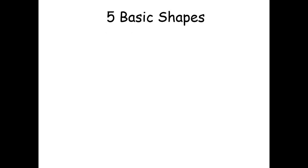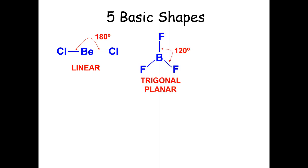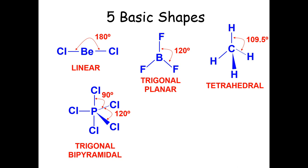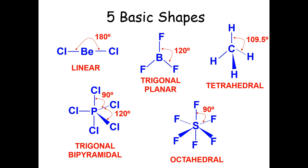So those are what I call the five basic shapes. Two pairs of electrons gives linear; three pairs gives trigonal planar; four gives tetrahedral; five gives trigonal bipyramidal; and six gives octahedral. The reason I call these the five basic shapes is that the ones involving lone pairs are still based on one of these five. The key to understanding shapes is first deciding the total number of electron pairs present — two, three, four, five or six — to determine which basic shape applies, then considering where the bonds and lone pairs go.